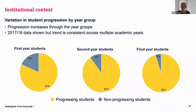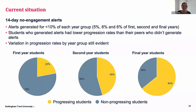We knew from previous work that progression rates varied by year group, with first year students less likely to progress than students in their second year, and students in their final year having the highest rate of progression — to achieving a qualification rather than to a next year's study. Analyzing the 14-day no-engagement alerts generated for between 5% to 8% of each year group, it's clear that whilst in all cases the alerts identified students whose progression rates were significantly worse than their peers, the alerts were greater indicators of risk of non-progression for first year students, where only 22% of alerted students progressed, compared to final year students, where 64% progressed.